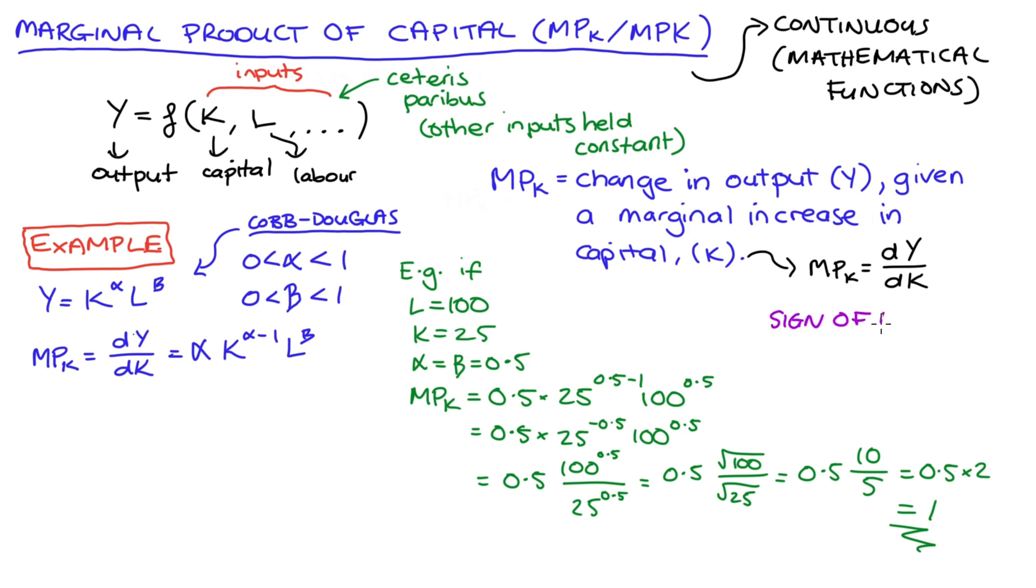In my example here, you can see that we did get a positive number back—so one is a positive number. Positive results for our marginal product of capital more generally mean that there is a positive relationship between capital and output, so as capital K increases, our output Y increases.